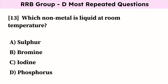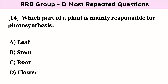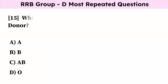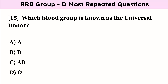Which non-metal is liquid at room temperature? Correct answer is bromine. Which part of a plant is mainly responsible for photosynthesis? Correct answer is leaf. Which blood group is known as the universal donor? Correct answer is O group.